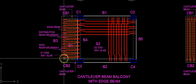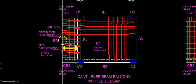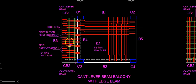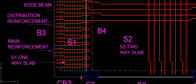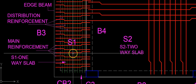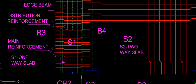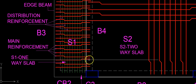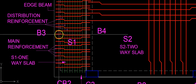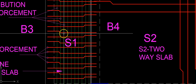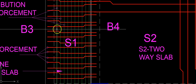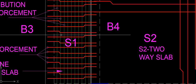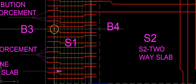The slab of the balcony spans along the shorter distance between beams B3 and B4. The main reinforcement in this balcony slab is shown in red, running along the shorter span. At right angles to this, shown in green, is the distribution reinforcement. Alternate bars of the main reinforcement are bent up near the support at an angle of 45 degrees to resist the shear created near the junction of the beam and the slab.